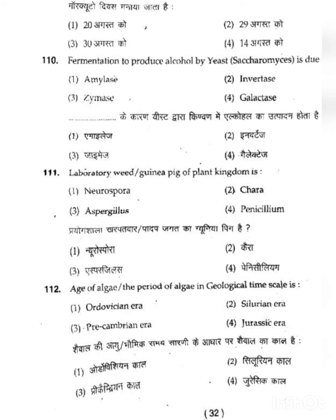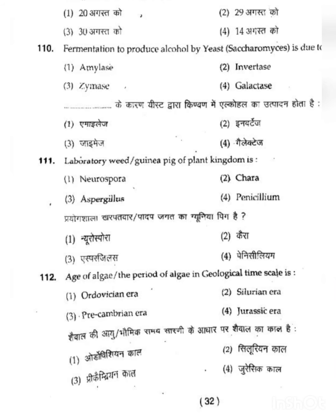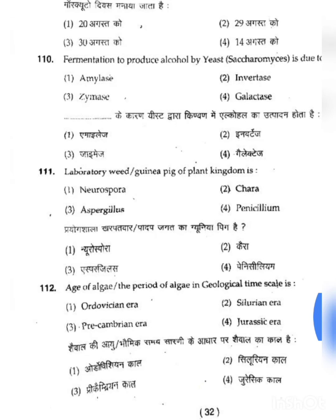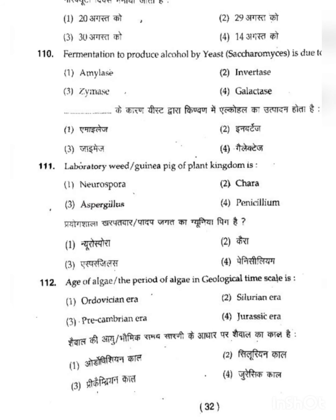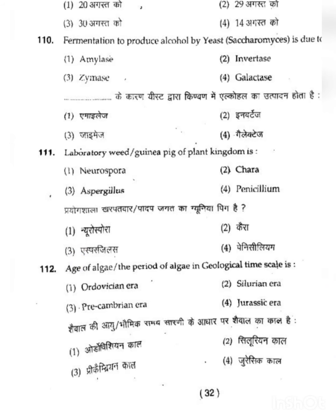Question 111: The laboratory weed or Guinea pig of the plant kingdom is called — the answer is Aspergillus (Aspergillus niger is its full name). It is a black mold normally found in damp places and is widely used in fermentation, which is why it is frequently used in laboratories. The correct answer for 111 is Aspergillus.